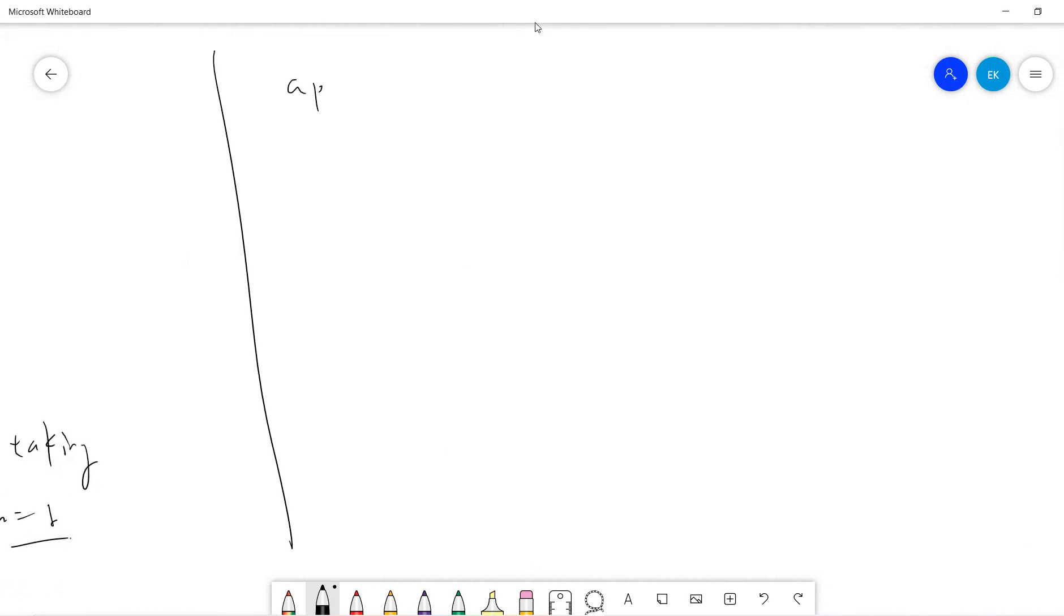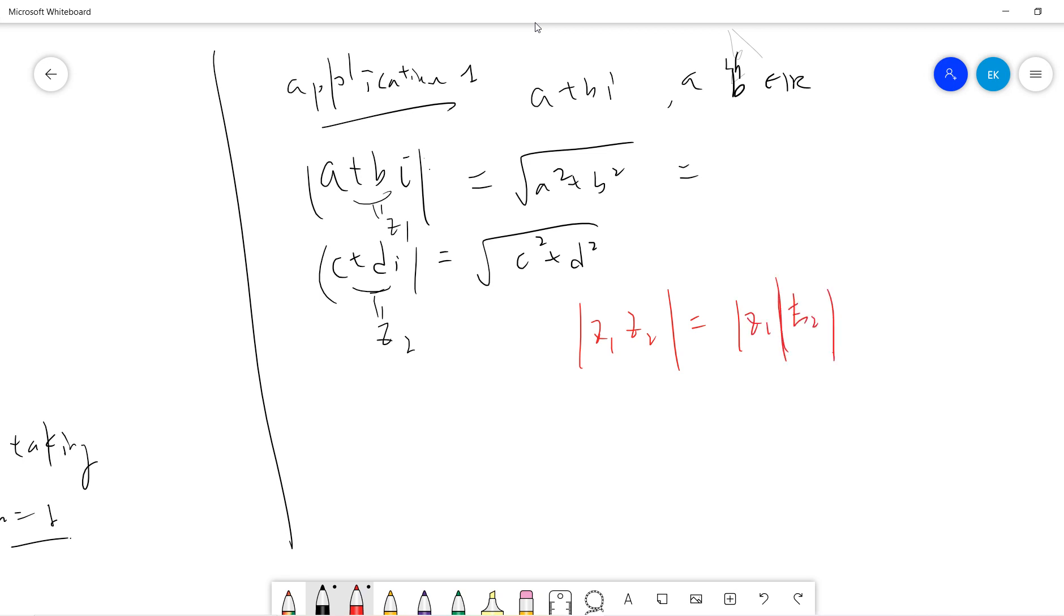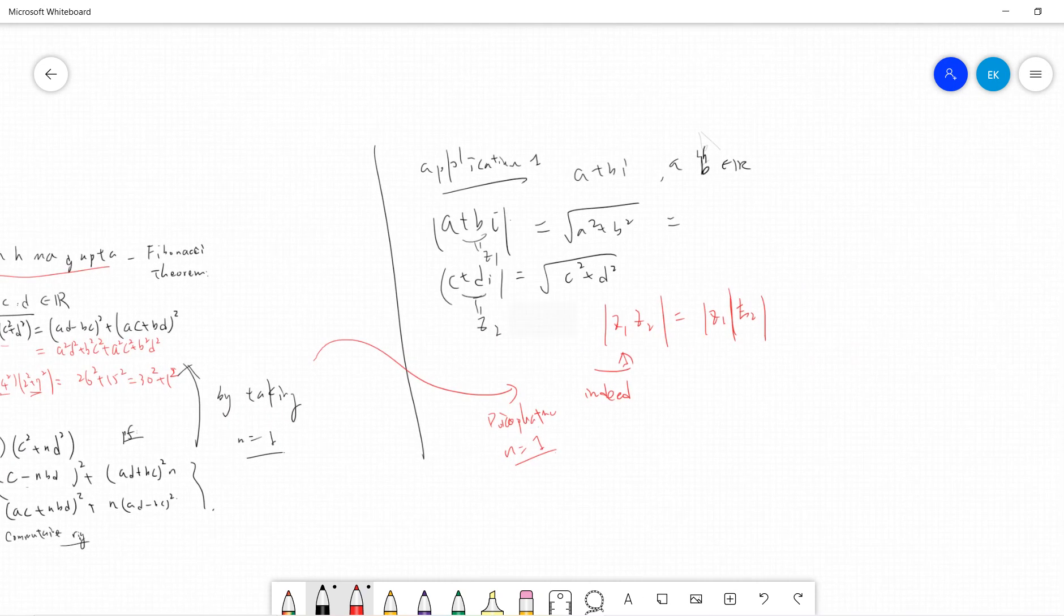Let's talk about the application. One of the applications is standard multiplication of complex numbers. If you take two complex numbers, called a+bi and c+di where a, b are real numbers, then the norm of it is defined to be the square root of a²+b². Let's call this Z1 and Z2. The property of norm is that |Z1·Z2| = |Z1|·|Z2|. And this is indeed the original defending identity, or basically this guy's identity from taking N equals to 1.